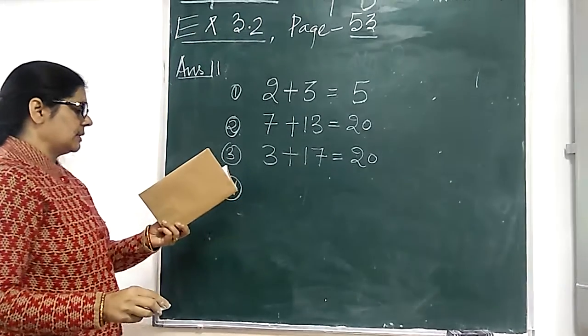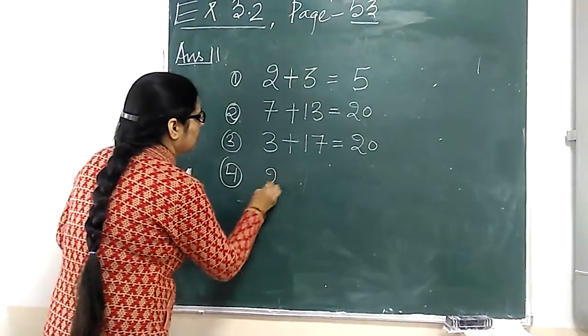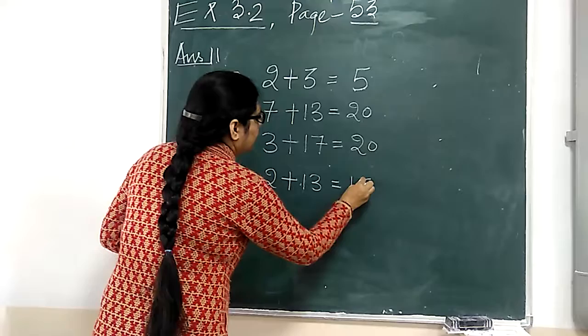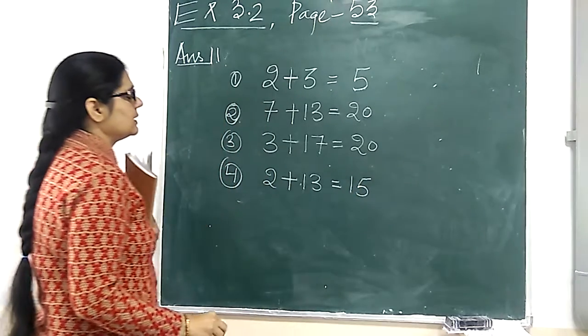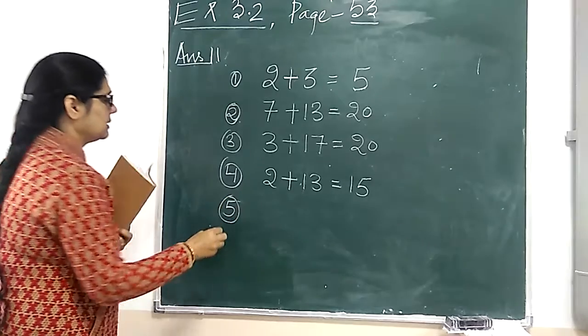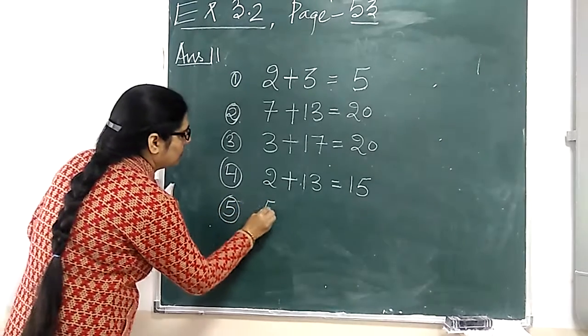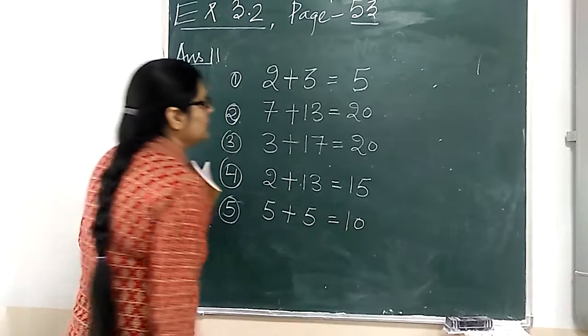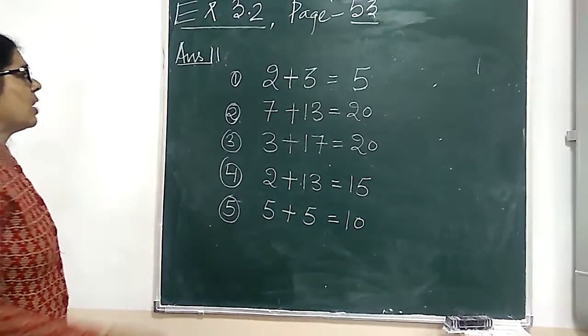Now, fourth pair is 2 plus 13, then 15, 15 is divisible by 5. Now, next, 5 plus 5, 10, 10 is divisible by 5.